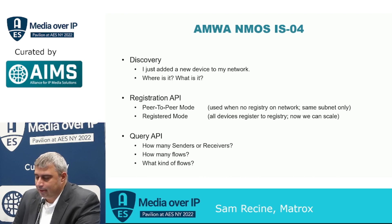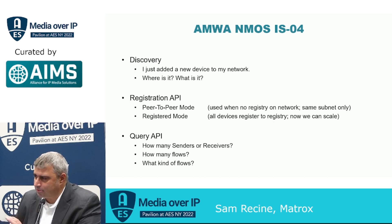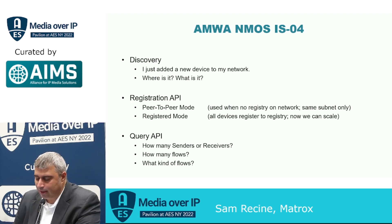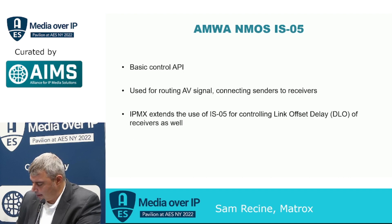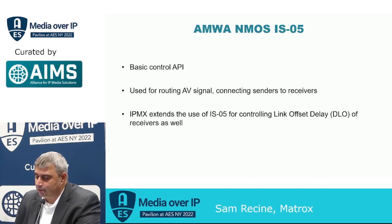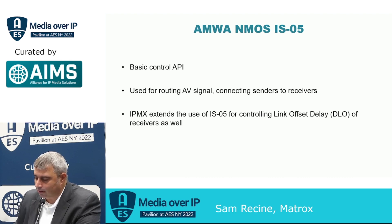IS-04 deals with asset discovery and registration API. We added peer-to-peer support, making this mandatory in IPMX to support peer-to-peer mode — more useful on the same subnet and smaller networks. We still depend on a registry when we have many assets to coordinate, and also the query API, which allows us to interview the network and see how many senders, receivers, and flows we have to manage. IS-05 is the basic control API that allows routing of audio and video signals and connecting senders to receivers. IPMX also uses IS-05 to control the link offset delay, giving us the nice synchronized experience when dealing with network and receiver processing delays.